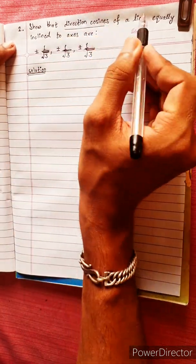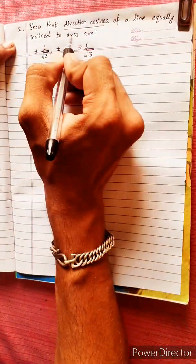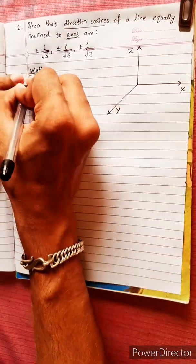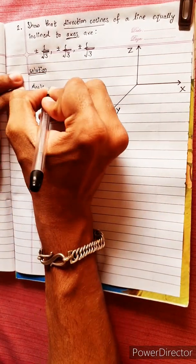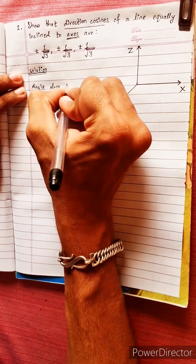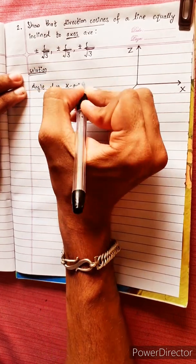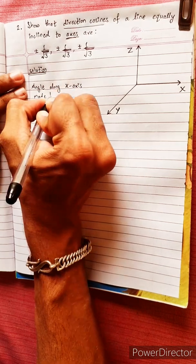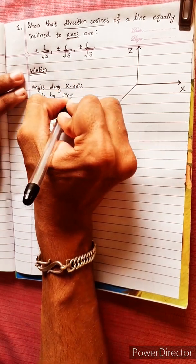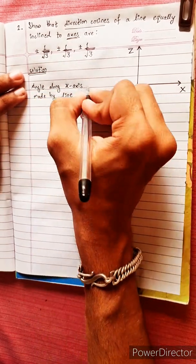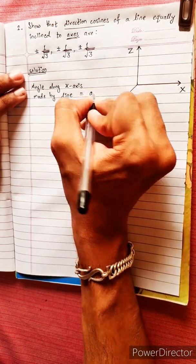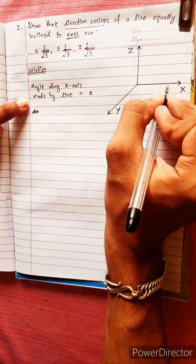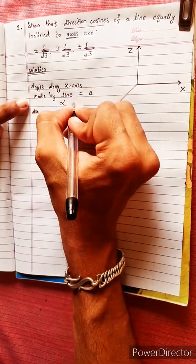Direction cosines of a line equally inclined to our three axes. The angle along the x-axis made by the line — suppose you create angle A. Along the x-axis, alpha equals A.